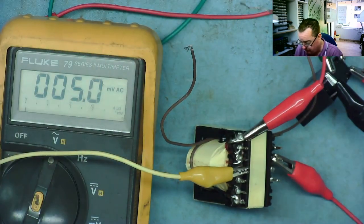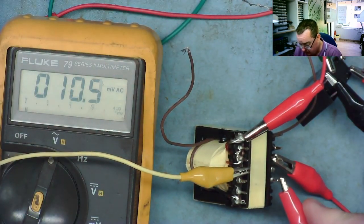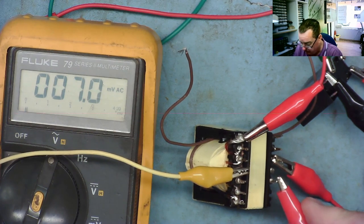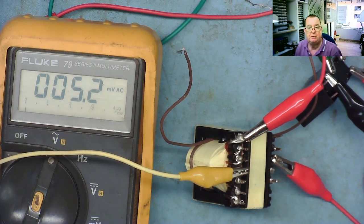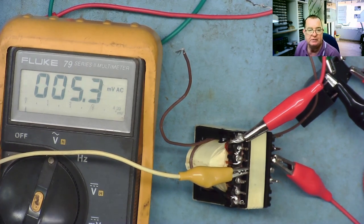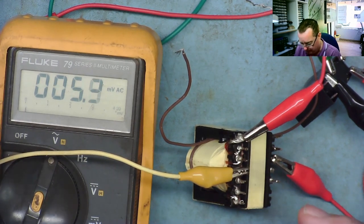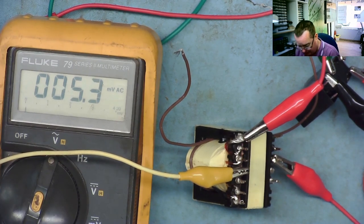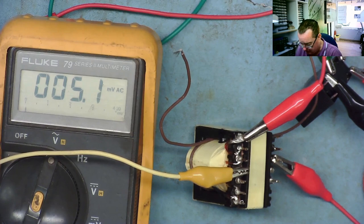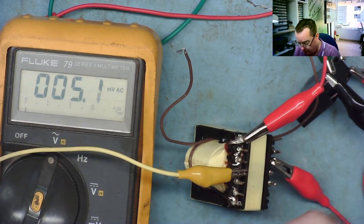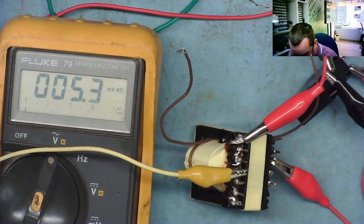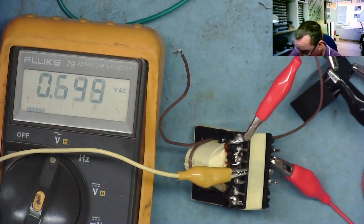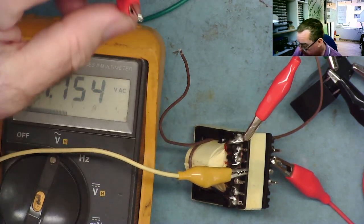We'll disconnect the shorted turn, what do we get? About eleven. So it does have an effect but it's not giving us that much difference, probably, that you could actually say it's a good or a bad transformer. Let's try putting the diode in series with the output of this transformer and then using DC.